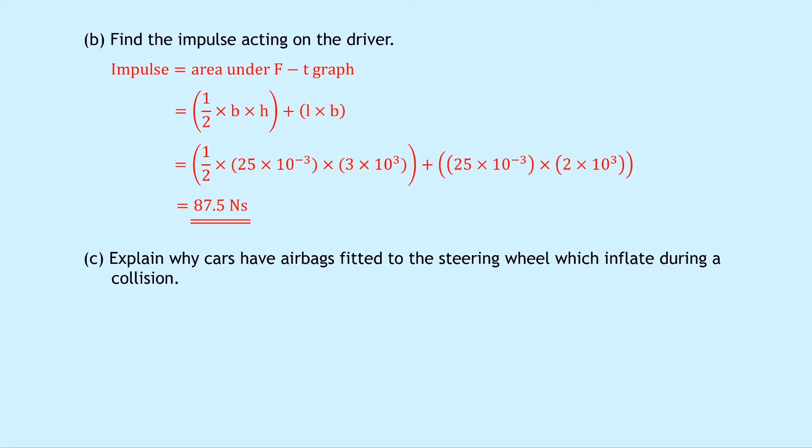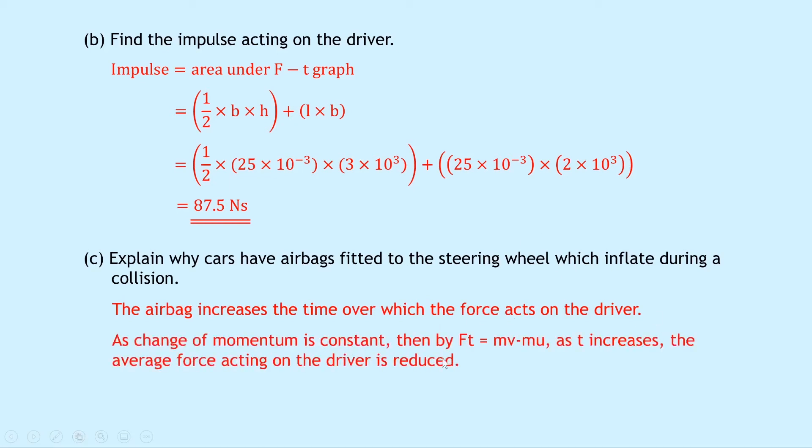Lastly part c says to explain why cars have airbags fitted to the steering wheel which inflate during a collision. Well remember from the theory we talked about this and we can say that the airbag increases the time over which the force acts on the driver. As change of momentum is constant then by the equation Ft equals mv minus mu or m(v minus u) if you're using brackets as t increases the average force acting on the driver is reduced. So because the right hand side of the equation stays the same and we're saying that the time over which the force acts increases due to someone hitting the airbag then the average force acting on the driver must be reduced and this is going to decrease the risk of injury.